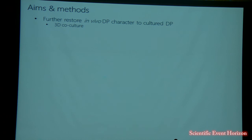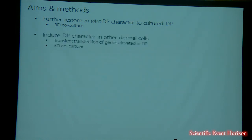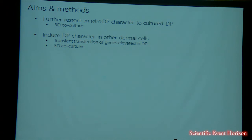There are three broad aims of the work I'm presenting today. We're going to attempt to further restore in vivo DP character to the cultured DP using 3D co-culture methods with various epithelial populations. We're also going to try to induce DP character into other dermal cells — specifically dermal sheath — using transient transfection of genes identified as elevated in vivo DP, and then 3D co-culture these dermal sheaths to see if that helps restore dermal papilla character.